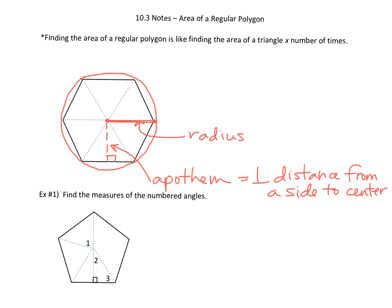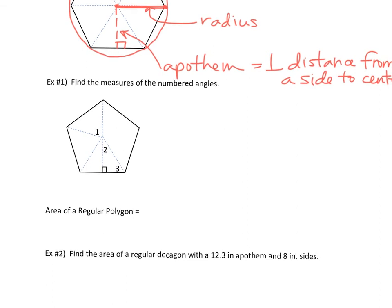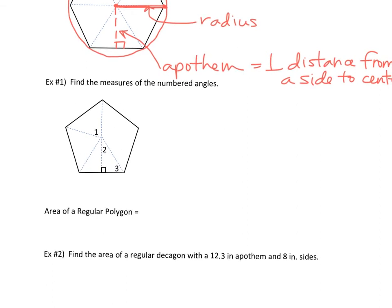So apothem always has to be the perpendicular distance from a side to the center of your figure. Center to side. So here's the first thing you're going to have to do with this stuff. We're going to find the measure of all of these angles. And if it helps you to see it like equally spaced, you could draw all of these in.